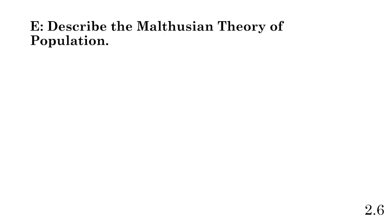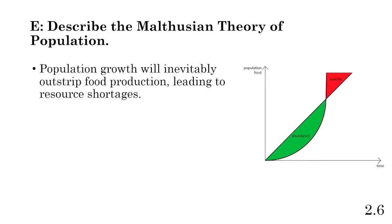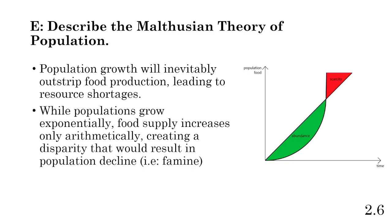Part E shifts away from the DTM to the Malthusian theory. The Malthusian theory states that population growth will inevitably outstrip food production, leading to resource shortages. Malthus said populations grow exponentially while food supplies increase arithmetically. If you look at an exponential function, it will eventually surpass that linear food supply function, leading to scarcity of food resources that will result in famine and population decline. To get the point for this part, you need to state that population goes over food supply, leading to shortages, famine, or population decline.